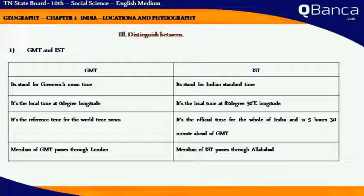IST stands for Indian Standard Time. IST is the local time at 82 degrees 30 minutes East longitude. It is the official time for India and is 5 hours 30 minutes ahead of GMT. The meridian of IST passes through Allahabad.